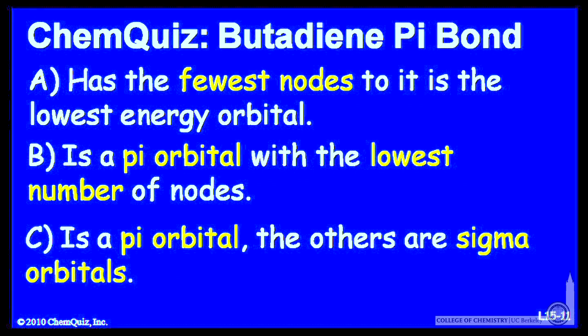Let's look at possible explanations for each of the answers. A has the fewest nodes, so it's the lowest energy. B is a pi orbital with the lowest number of nodes, so it's the lowest energy.